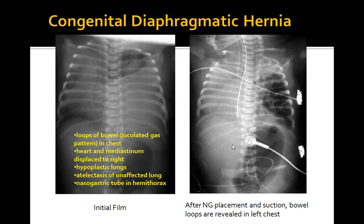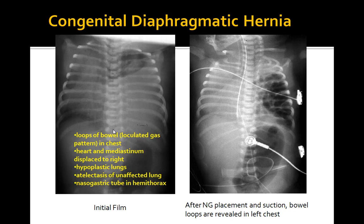Looking at the initial film, you can see loops of bowel, a loculated gas pattern, and the heart and mediastinum are displaced to the right. There are hypoplastic lungs and atelectasis of the unaffected lung, along with a nasogastric tube which is somewhat hard to see. On the repeat x-ray after nasogastric placement and suction, you can see the bowel loops revealed in the left chest. Chest x-ray is a must.